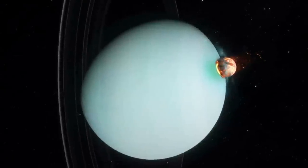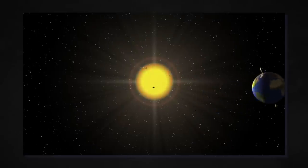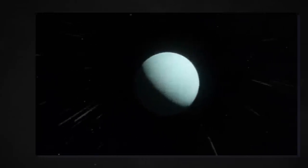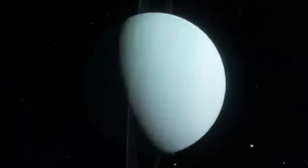Uranus is about four times the size of our planet Earth in diameter. It takes the planet about 84 Earth years to complete its orbit around the Sun. Uranus also has one peculiar quality. It appears to be lying on its side.